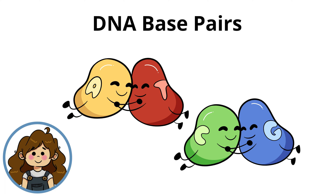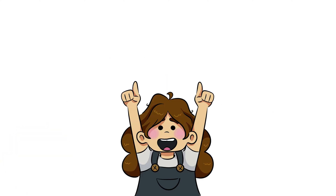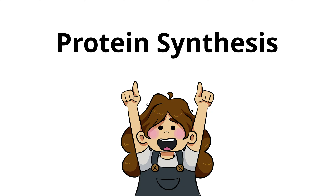which are known as the base pairs of DNA. DNA's base pairs are important because the order of these pairs forms a special code, and this code specifies which proteins our cells create. Additionally, the process by which DNA provides codes for how to make proteins is called protein synthesis.